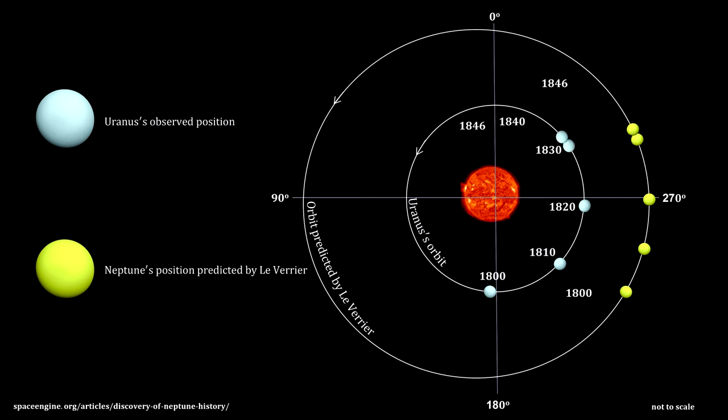Astronomer Urbain Le Verrier went to work to try to discover this new planet. Early in 1846, he published calculations that came very close to where it actually was.